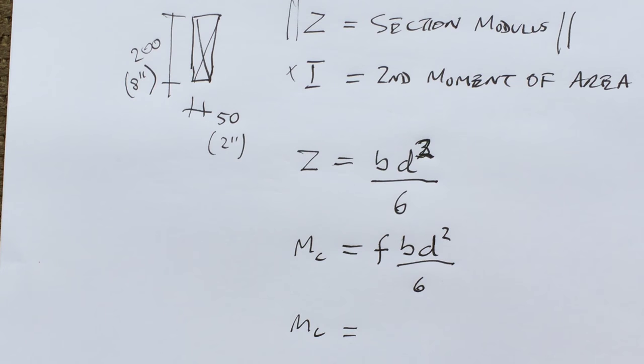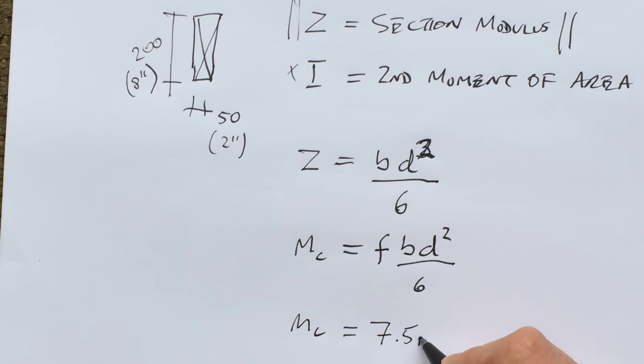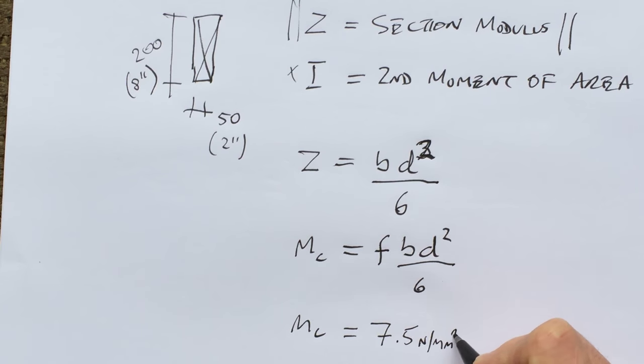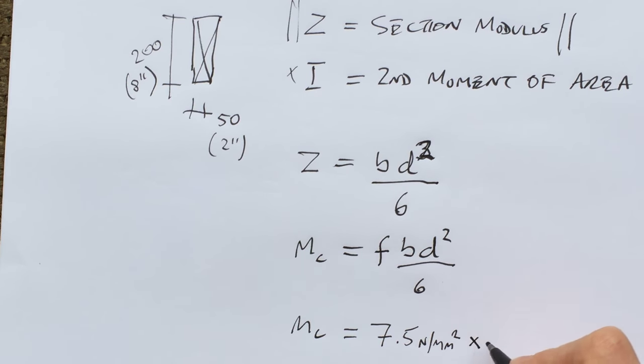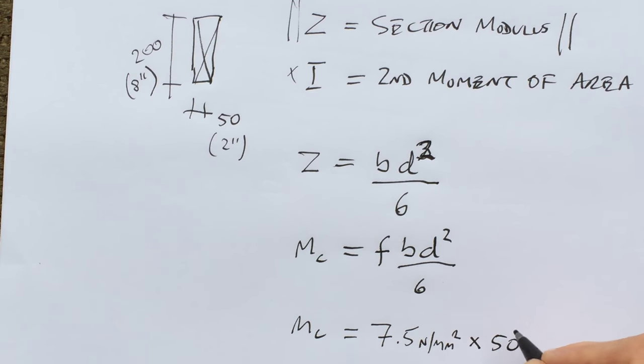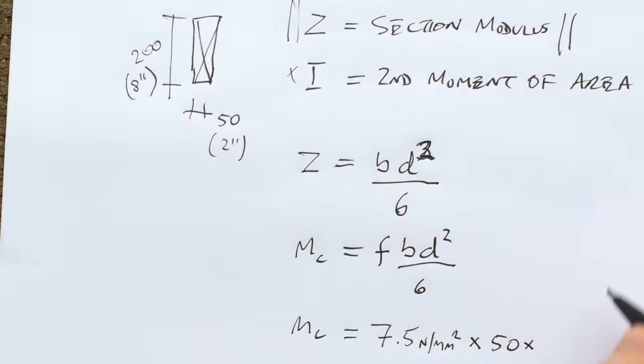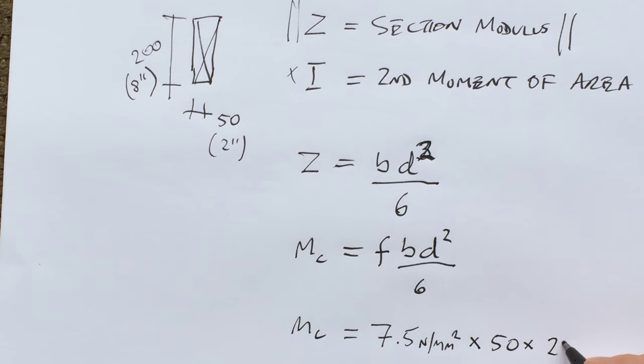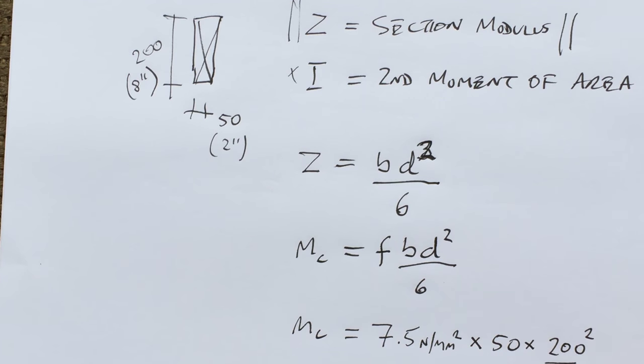C24 timber is 7.5 newtons per millimeter squared times 50, which is the breadth, times 200, which is the depth, squared, all divided by six.